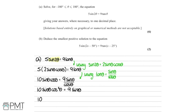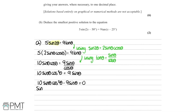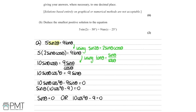Instead, we bring the sinθ term over to the other side by subtracting, leaving us with 10sinθcos²θ − 9sinθ = 0. Then we factorize out the sinθ to get sinθ(10cos²θ − 9) = 0. This gives us either sinθ = 0 or 10cos²θ − 9 = 0.